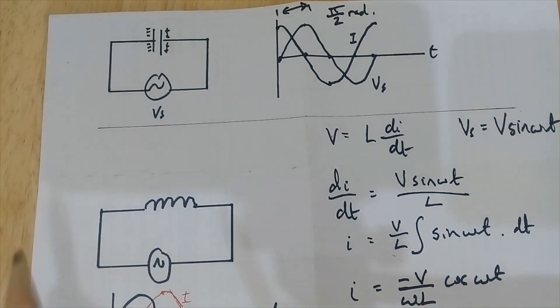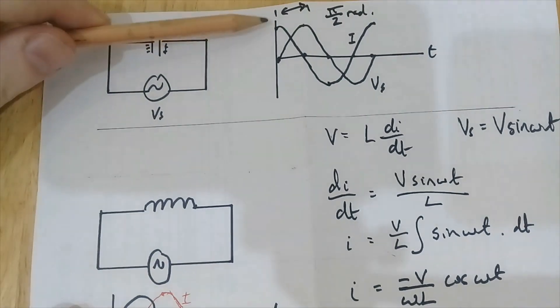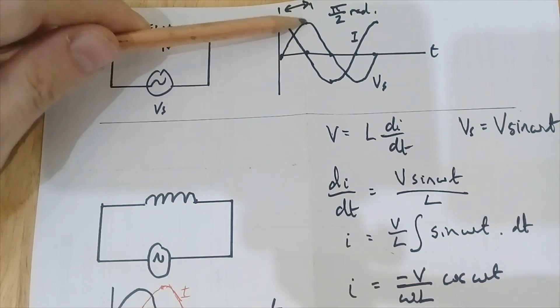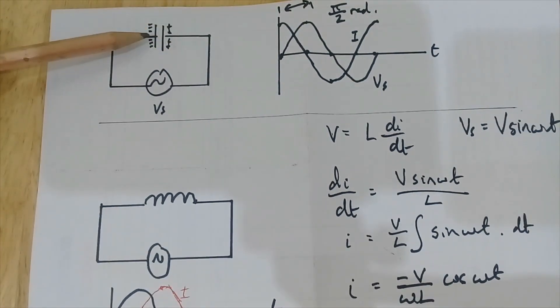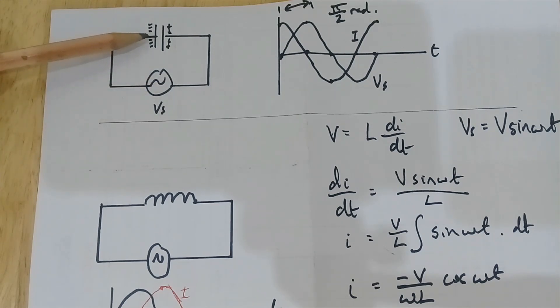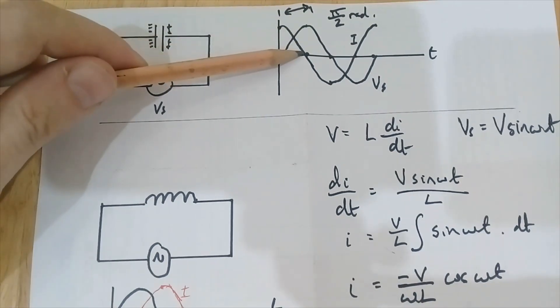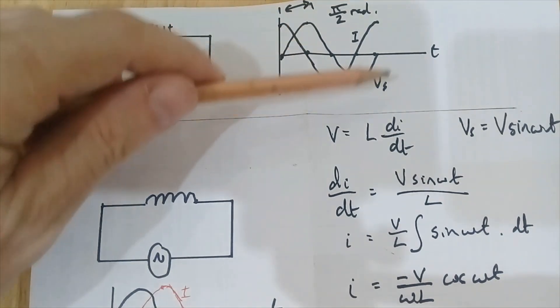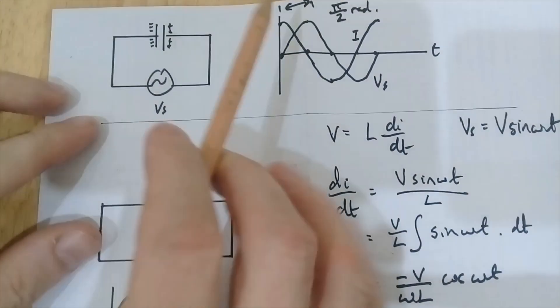As I initially switch the supply on there'll be a large current. As the voltage increases to a maximum, we'll have maximum charge on the capacitor and that voltage will match the supply voltage for that moment in time, and no current will flow. That's represented by no current down there.